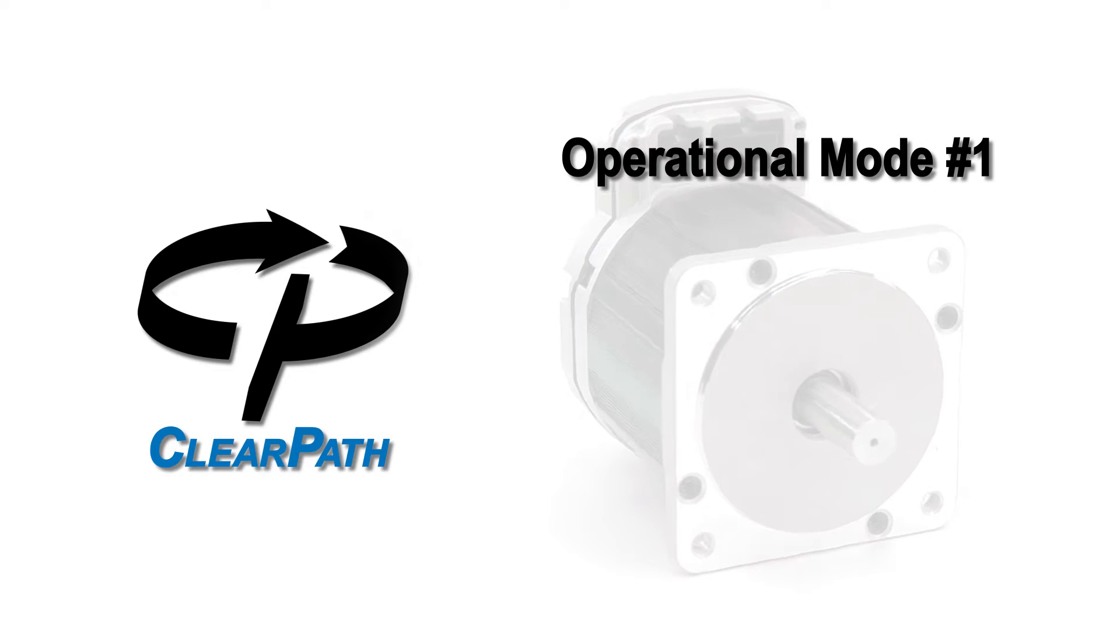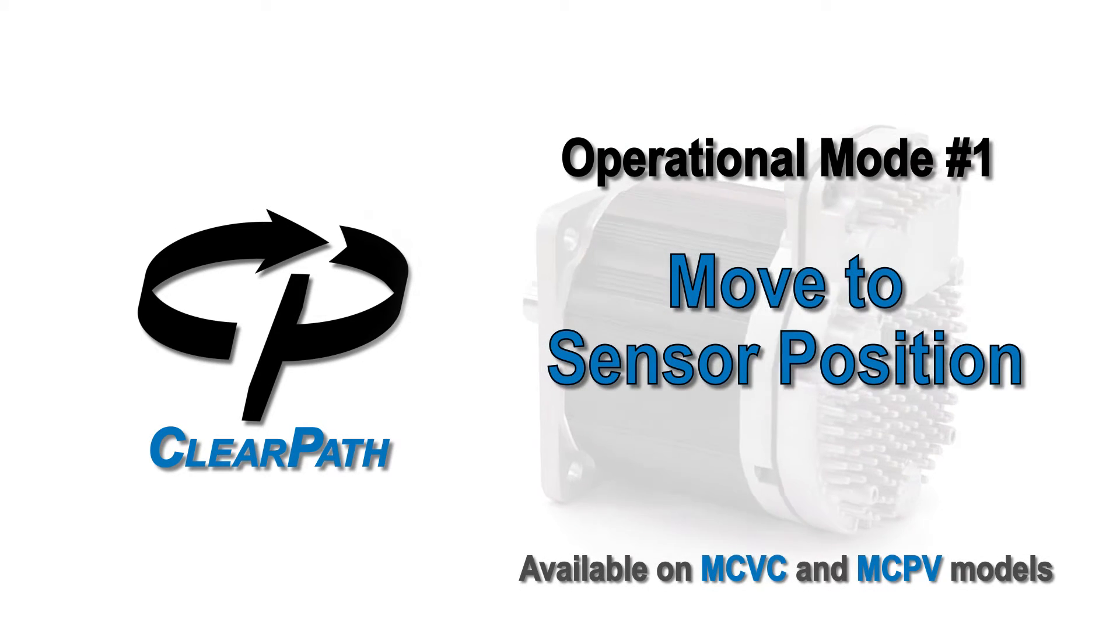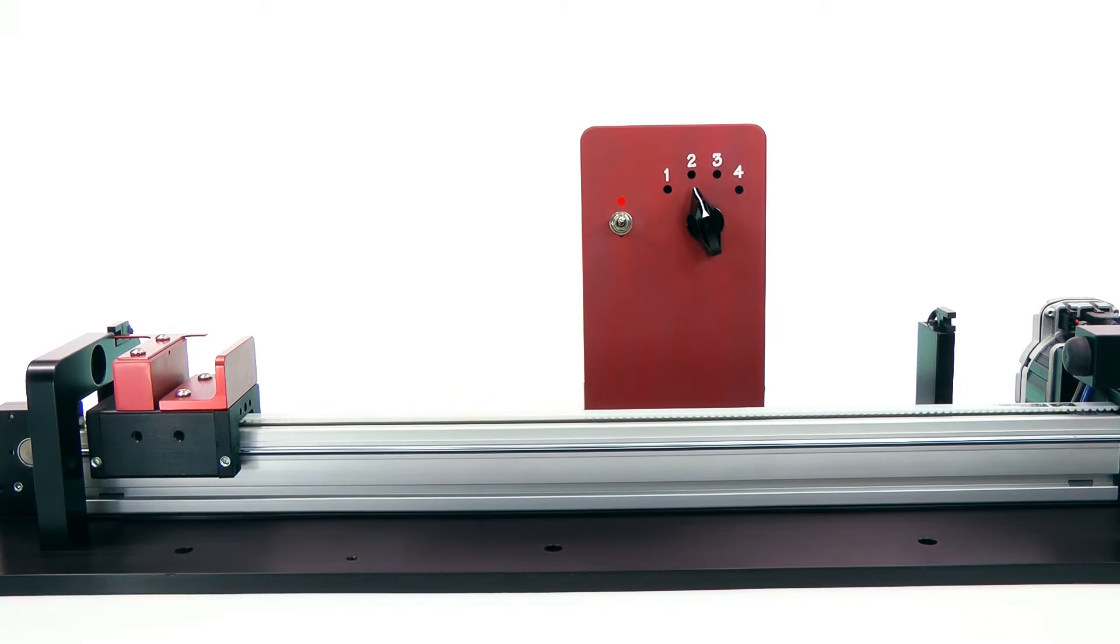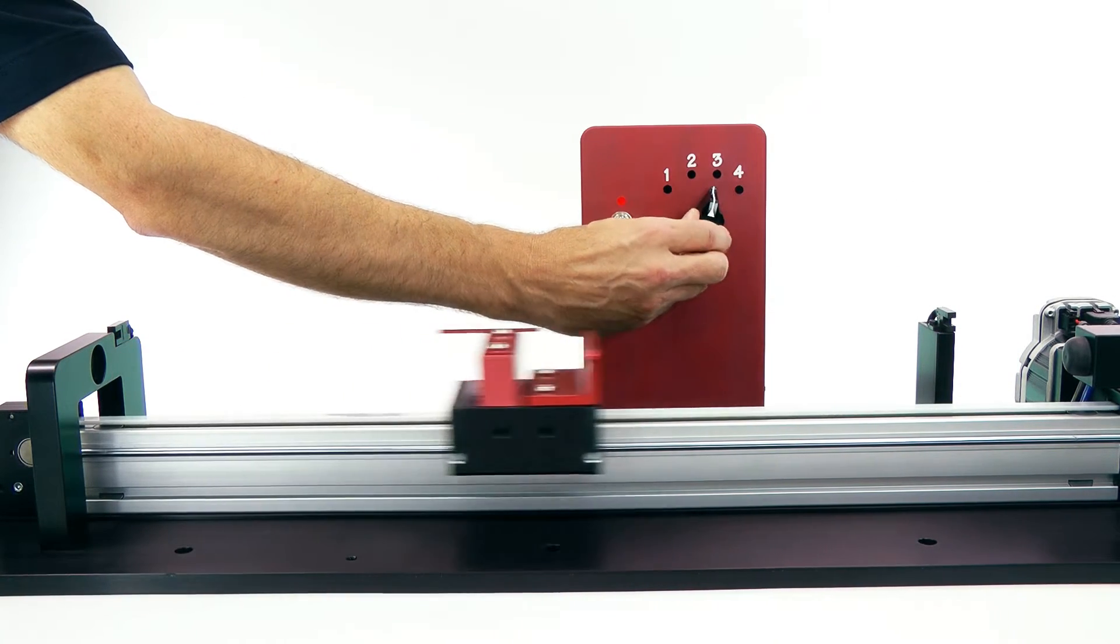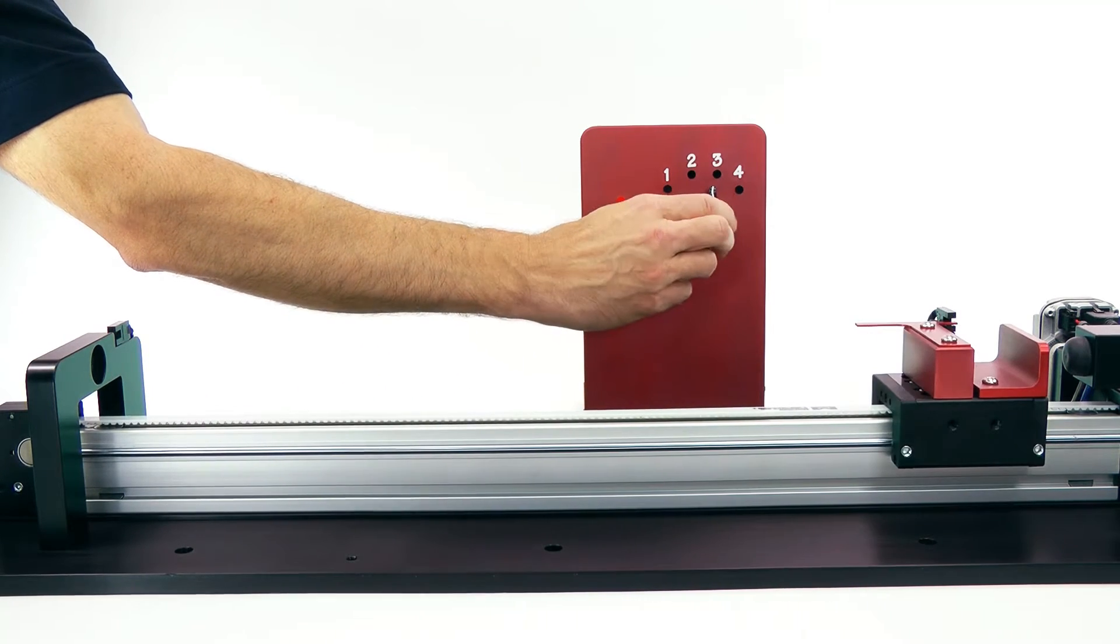ClearPath Operational Mode 1: Move to Sensor Position. Move to Sensor Position is the mode to use when you want to smoothly move back and forth between two positions that are defined by sensors or switches.